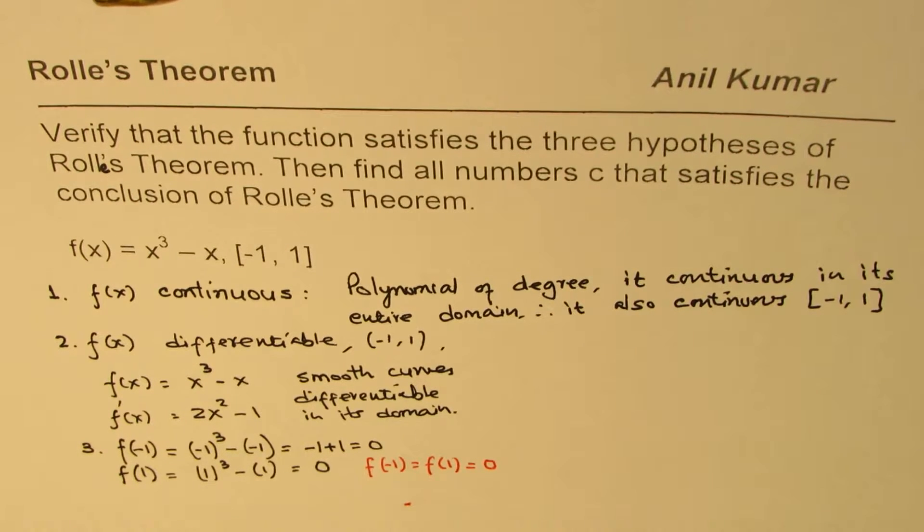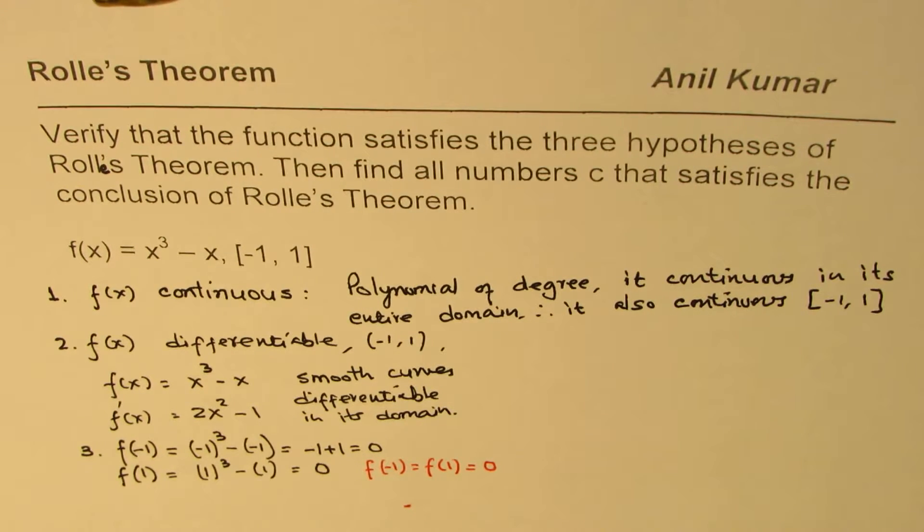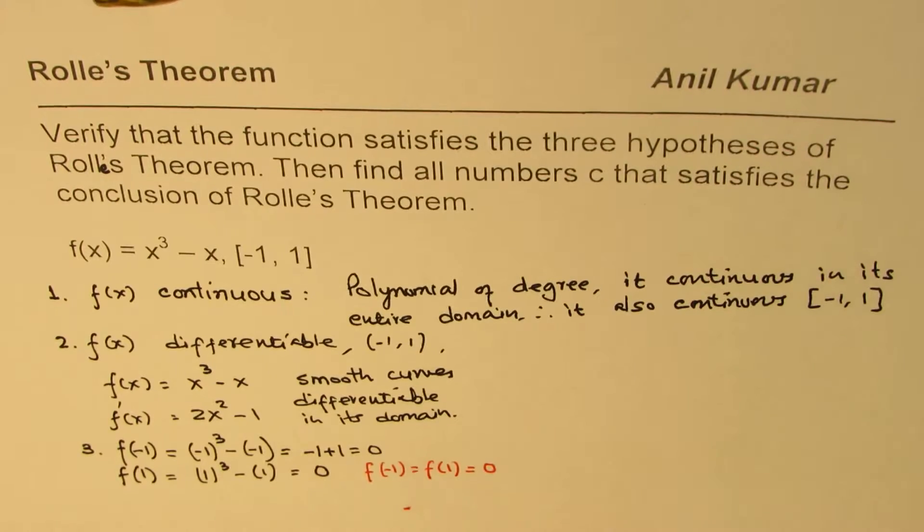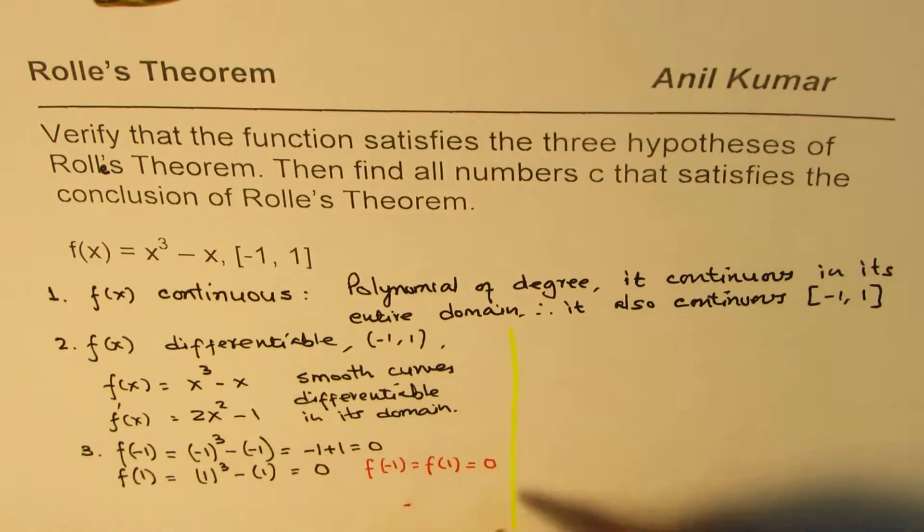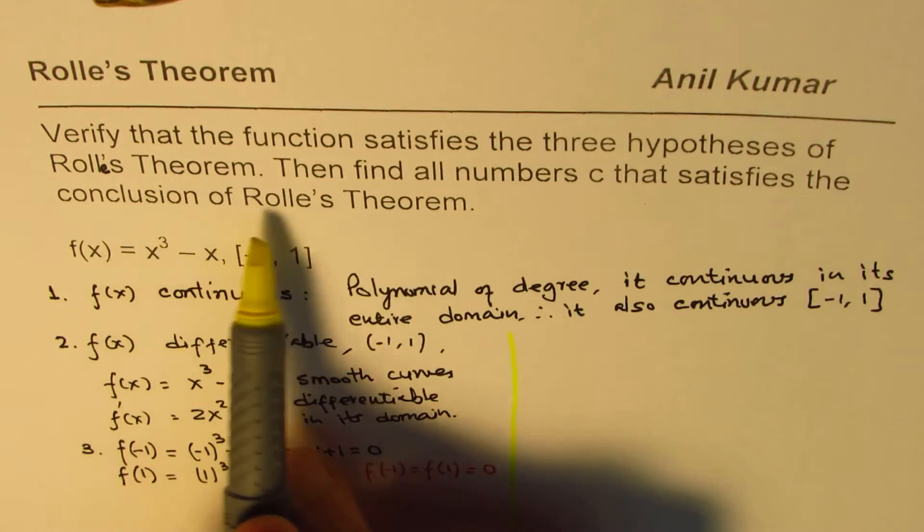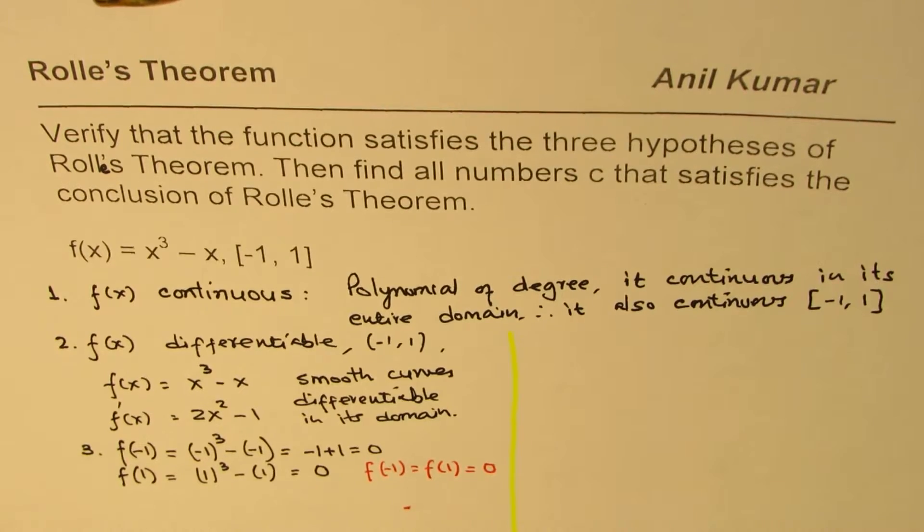So that is the third condition. When we have f(a) = f(b), in that case we can apply Rolle's theorem. Now the second part of this question is to find all possible c that satisfies the conclusion of this theorem.